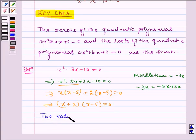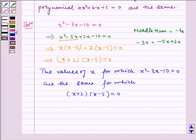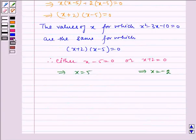So the values of x for which x squared minus 3x minus 10 equals 0 are the same for which (x plus 2) times (x minus 5) equals 0. Therefore, either x minus 5 equals 0 or x plus 2 equals 0, which implies x equals 5 or x equals minus 2. Hence, the required roots are 5 and minus 2.